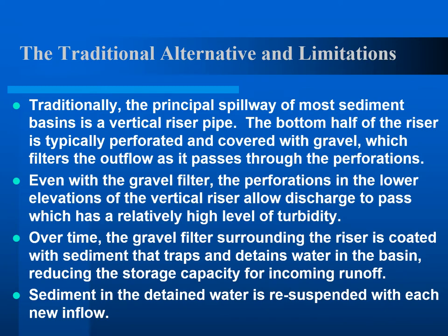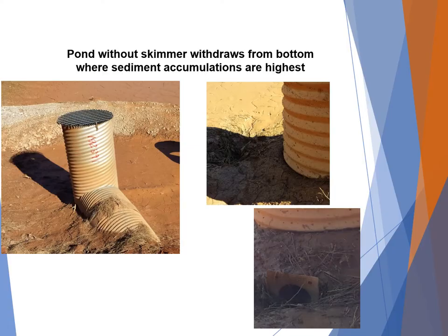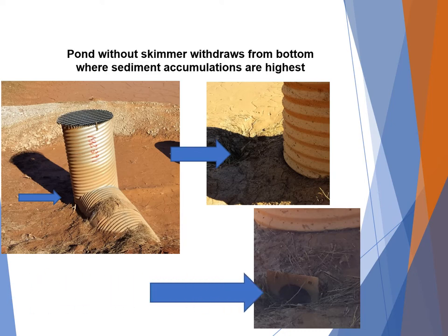Traditionally, the principal spillway of most basins is a vertical riser pipe with perforations, typically with gravel around the lower half intended to filter out sediment. Even with the gravel filter, perforations at lower elevations allow discharge with a relatively high level of turbidity and sediment concentration. Over time, the gravel filter becomes coated with sediment, trapping and detaining water. Mud coats the bottom of the pond and the filter ring, and significant sediment reaches the orifice located at the bottom where accumulations are highest.